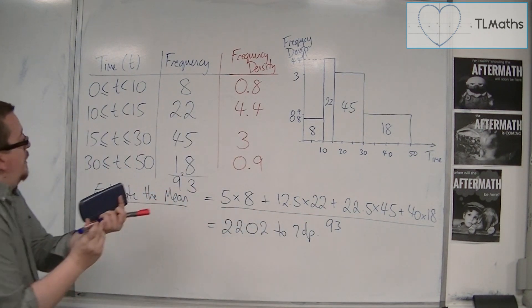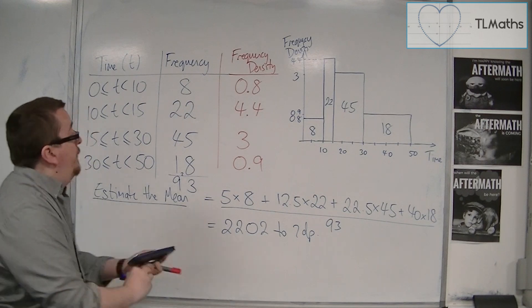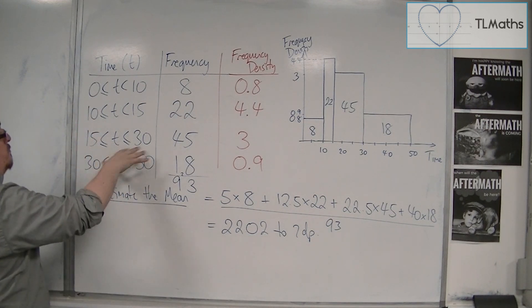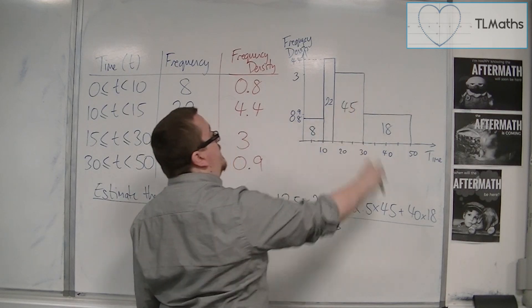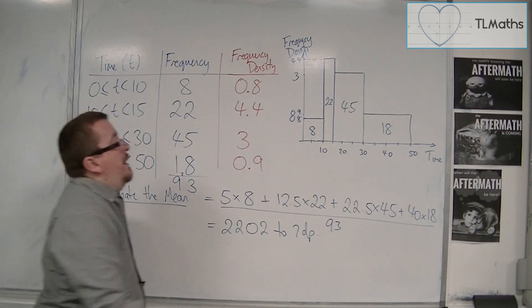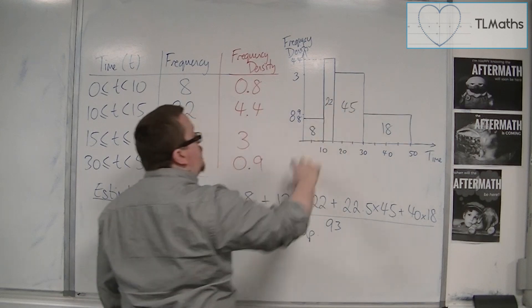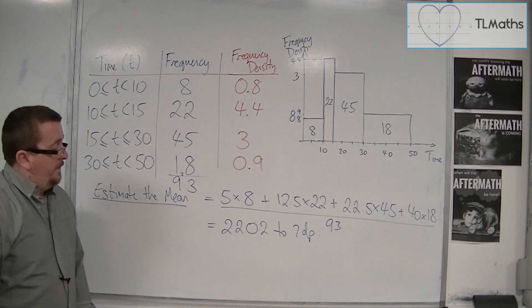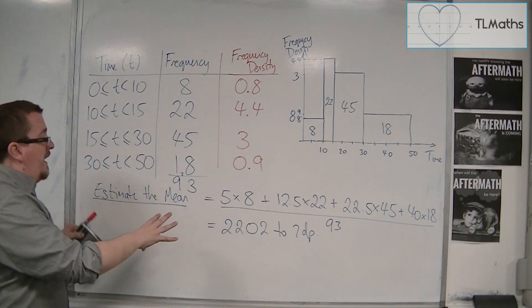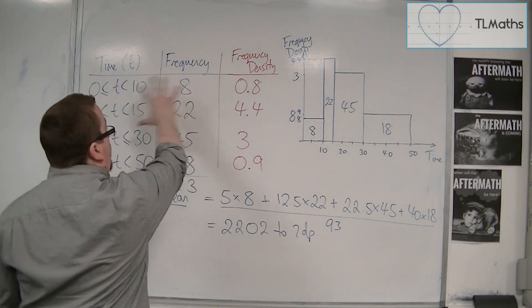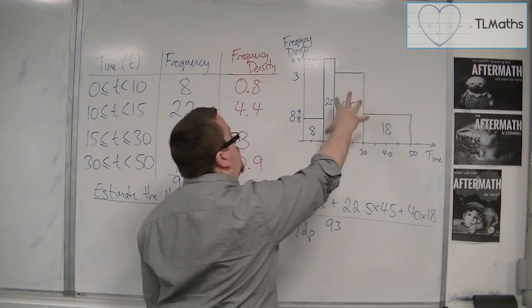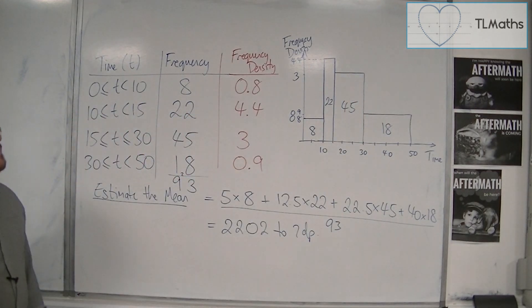So make sure that that makes sense. 22.02. That makes sense. That's where you'd probably expect the mean to be. Around about that kind of area where the majority of the data is. So that's how we can estimate the mean. Now you can either look at it from a tabular point of view. Or you can look at it straight from the histogram.